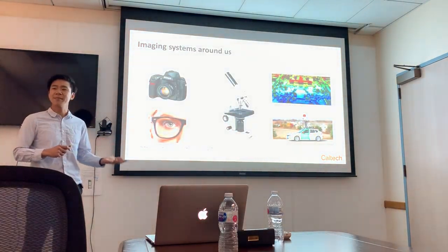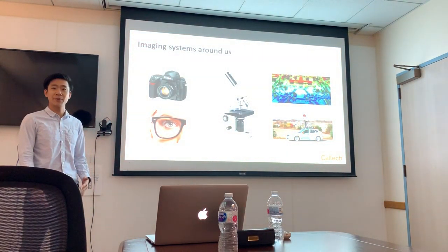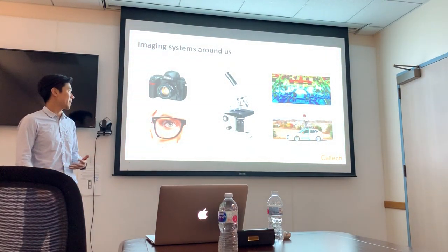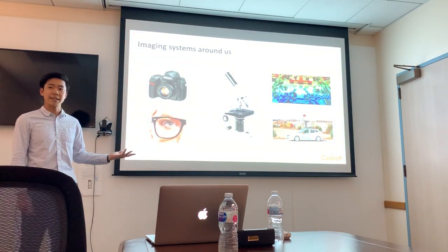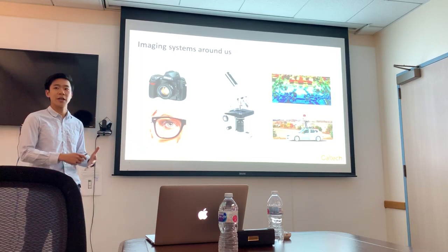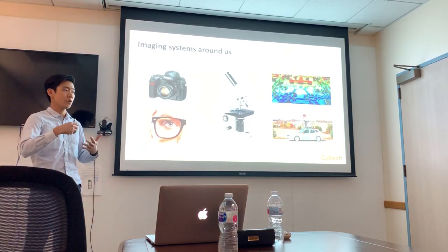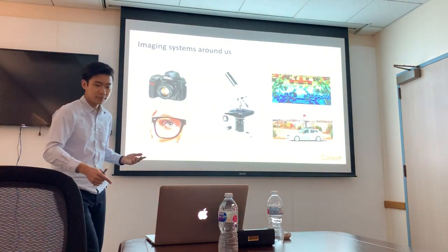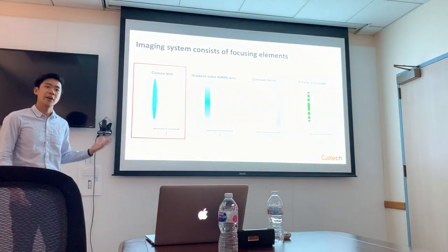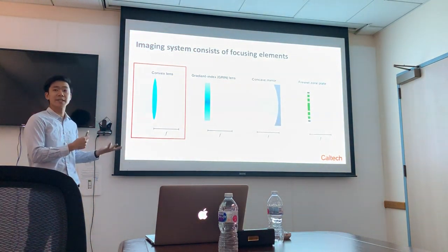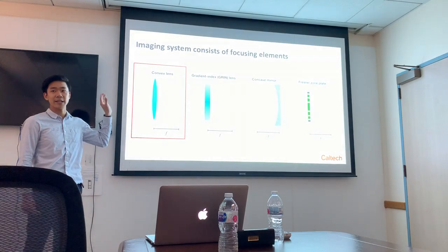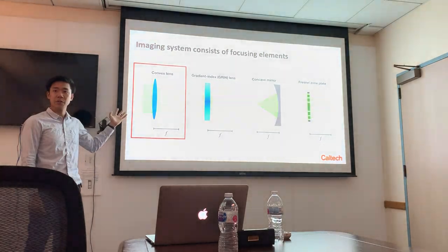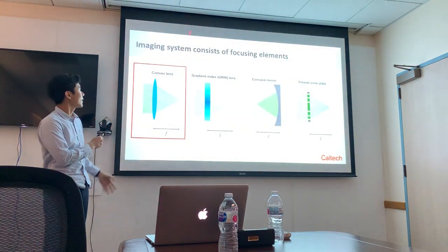Imaging systems permeate our lives. For example, a camera helps us capture memories. We are even born with a pair of imaging systems — the eyes. And in science, a microscope helps you look at ever smaller things. Imaging systems also help you gauge depth and map the world around us. All of these imaging systems invariably have focusing elements to focus a beam of light into a point. There are several ways to focus the beam, but we primarily focus on the convex lens.